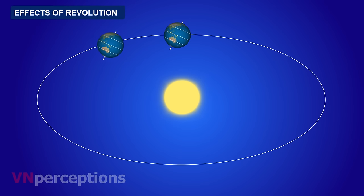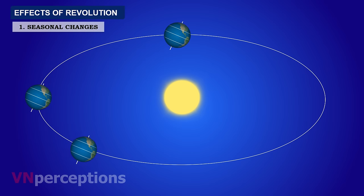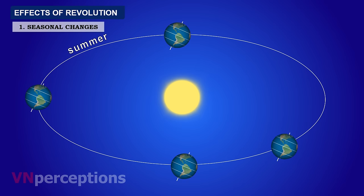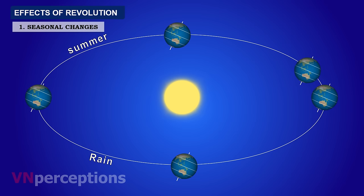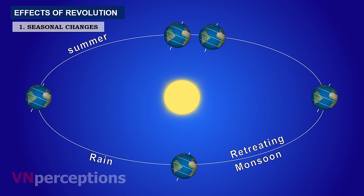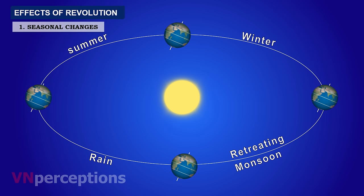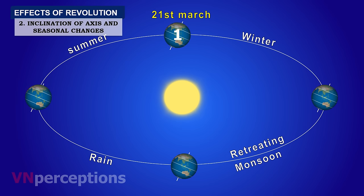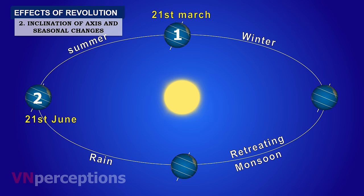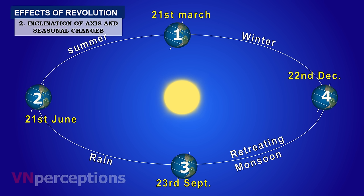The first effect of revolution is seasonal changes. Because of the revolution of the earth, we have summer, then rains, then retreating monsoon, and then winter. Consider the four positions of the earth: on 21st March, 21st June, 23rd September, and 22nd December.